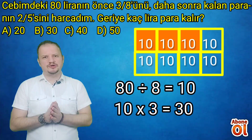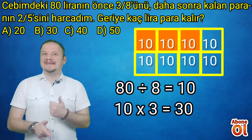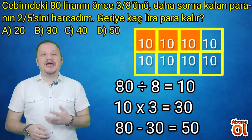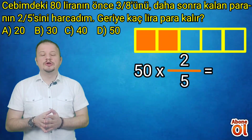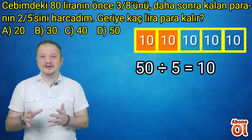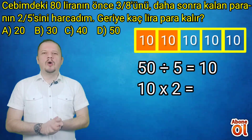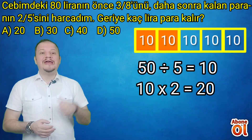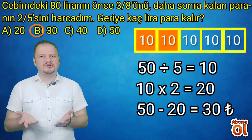Öncelikle 30 lirayı harcıyoruz. 80'den 30 çıkarsa 50 kalır. Şimdi 50 liranın 5'te ikisini hesaplıyoruz: paydada 5 var, 50'yi 5'e bölersek 10 buluruz. 5'te ikilik kısım için 10 ile 2'yi çarpıyoruz; 20 eder. 50'den 20'yi çıkarırsak 30 lira kalır. Doğru seçenek B seçeneğidir.